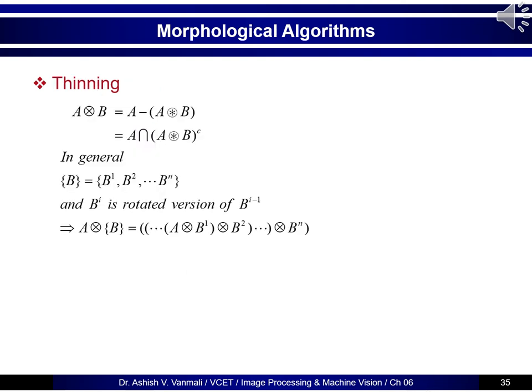The next algorithm commonly used is thinning. When objects are thick and we want to extract information, we thin them first. The thinning symbol is a cross with a circle around it, and thinning A with B is defined as A minus (A ⊛ B), or equivalently A ∩ (A ⊛ B)^c. In general, B is a set of structuring elements B1, B2, B3, ..., Bn, where each B_i is a rotated version of B_{i-1}.